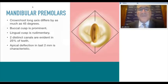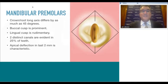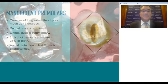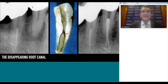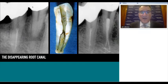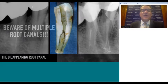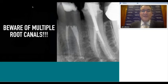Mandibular premolars: 25% may contain a lingual canal. Shape the buccal canal first, then orient your file toward the lingual to get a catch and manage it as we discussed. Lower premolar teeth often show the case of the 'disappearing root canal' where the canal appears to calcify. But if the radiographic beam comes from the buccal direction with a buccal and lingual root canal, increased dentin thickness makes it appear there's no canal—in actuality, that canal has bifurcated. Understand the anatomy and beware of multiple canals.